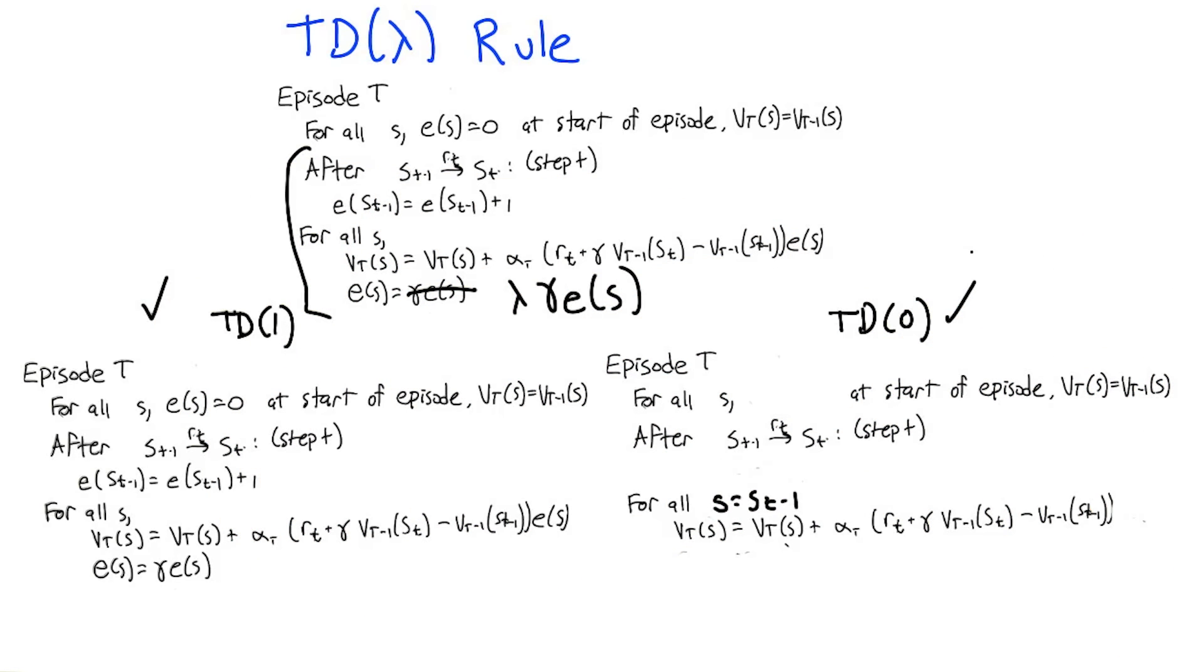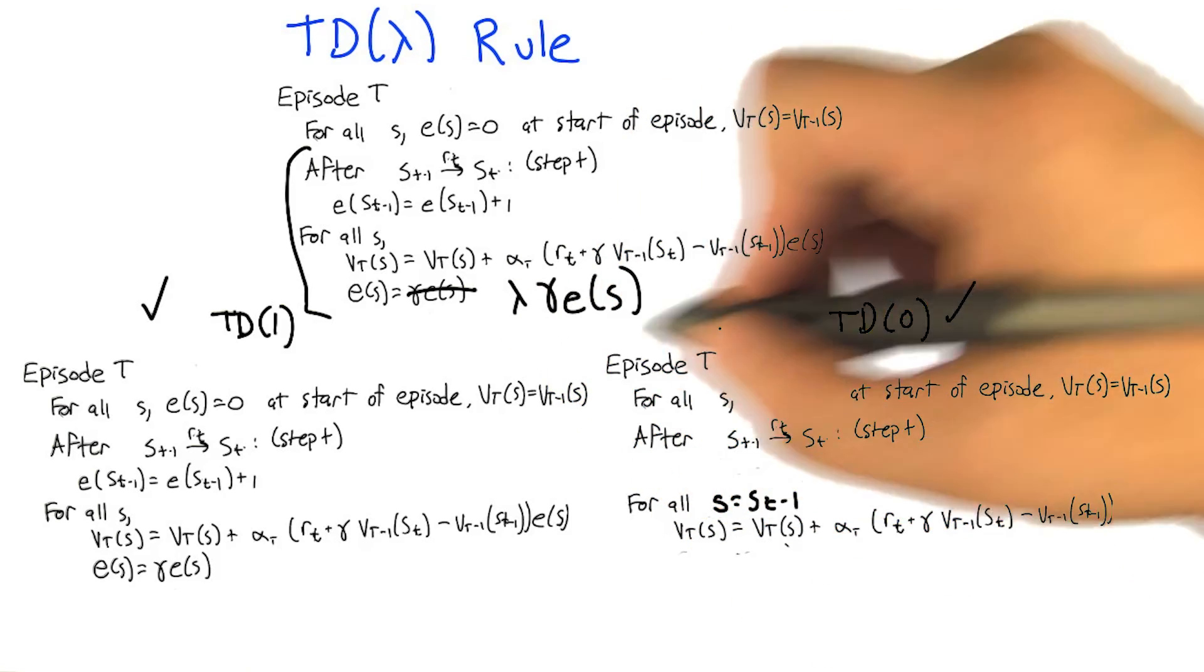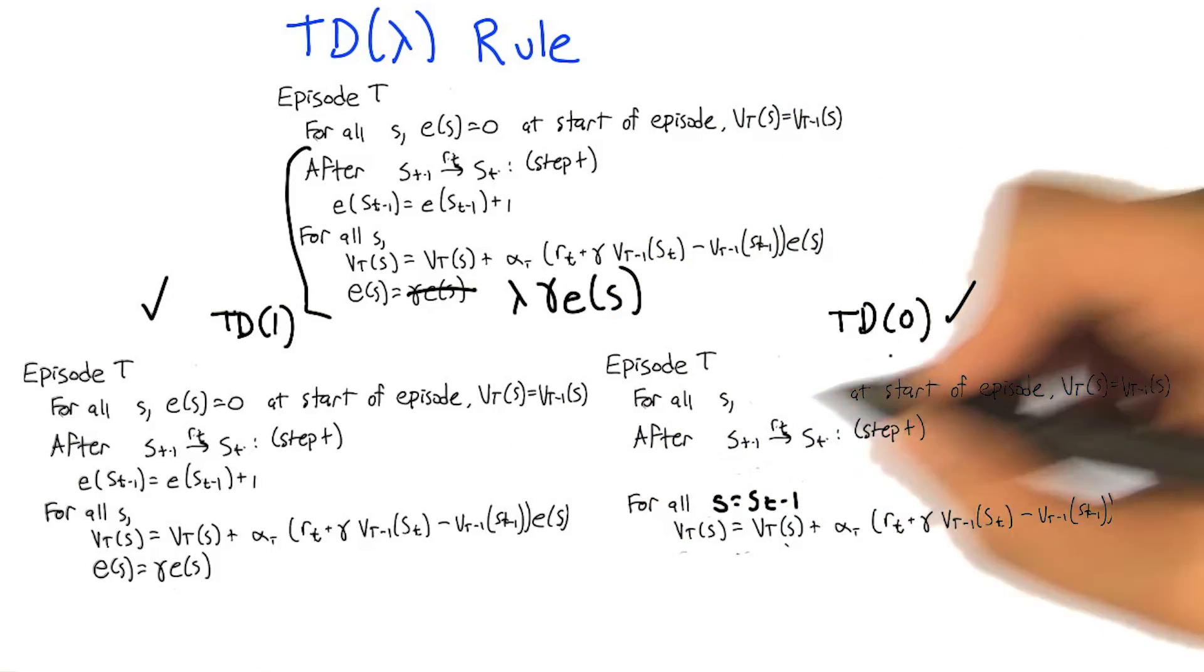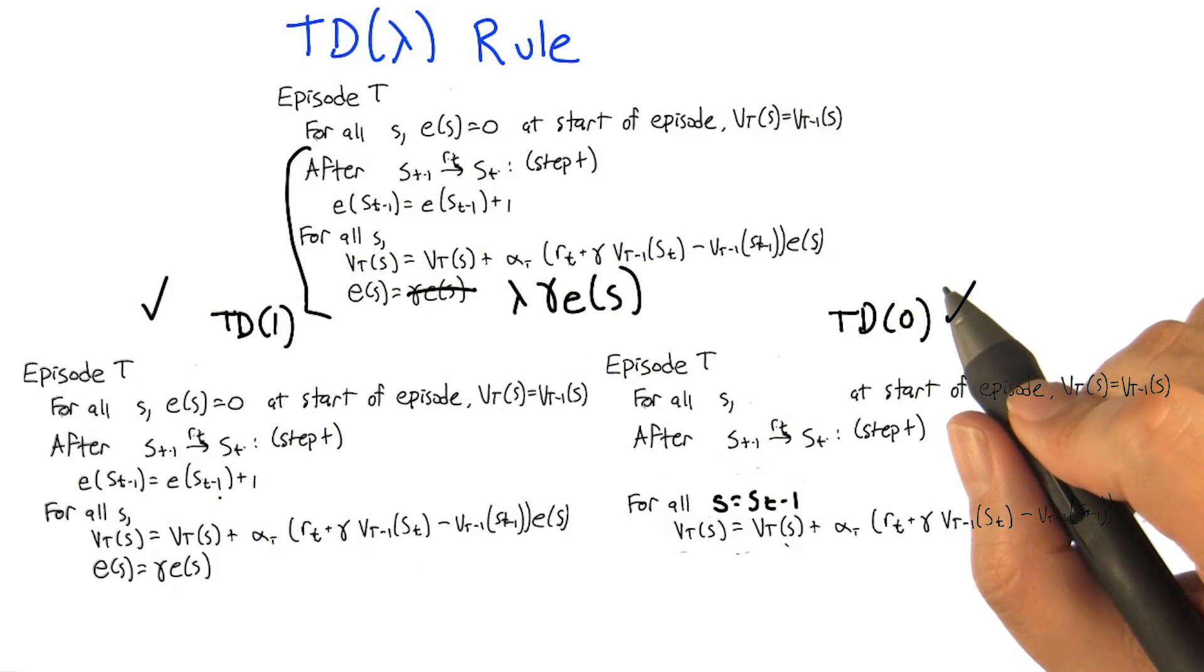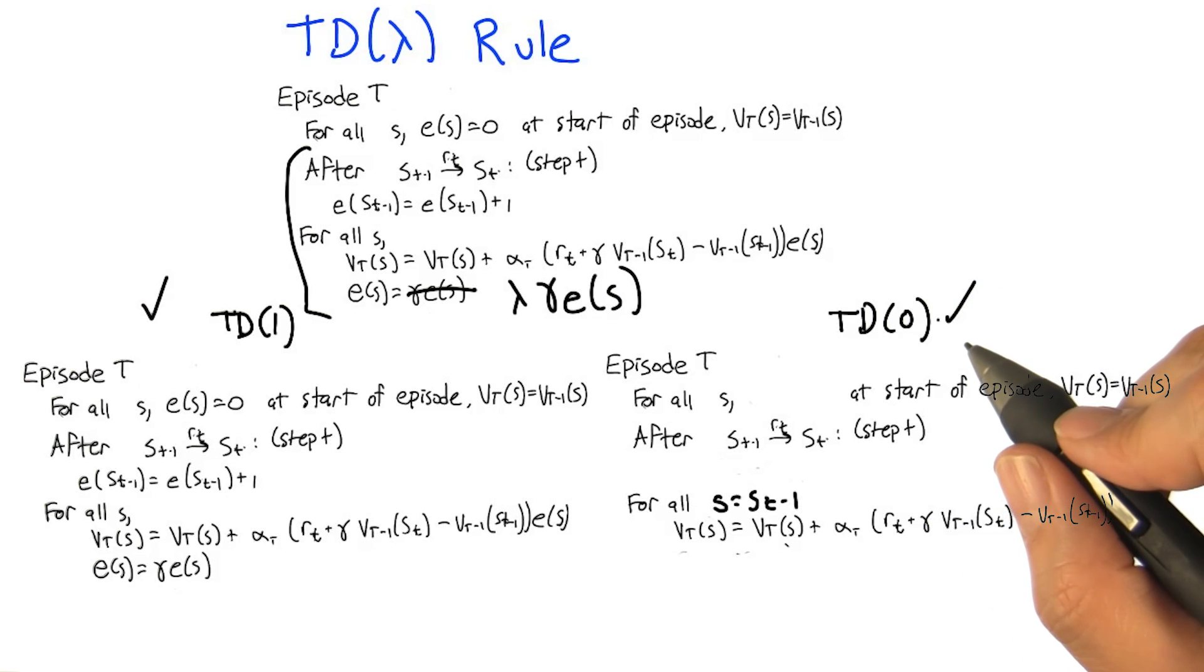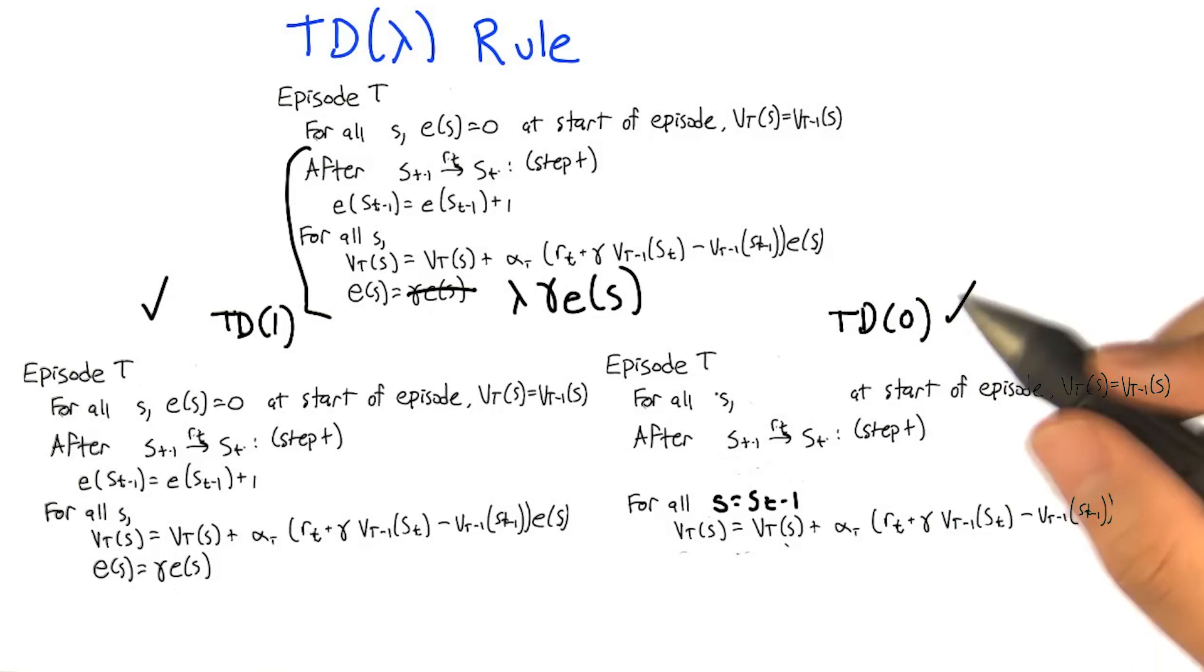And so what makes this interesting is not just that we can cleverly shoehorn two algorithms into one, but that it allows us to actually use values of lambda that are in between, which gives us kind of elements of both of these. It has TD(0)-ish things to it and TD(1)-ish things to it. And what we're going to look at next is how to think about this rule, this generalized TD(λ) rule, so that it kind of makes some sense to kind of ground it in quantities that we can understand. Okay. Well, I look forward to that.